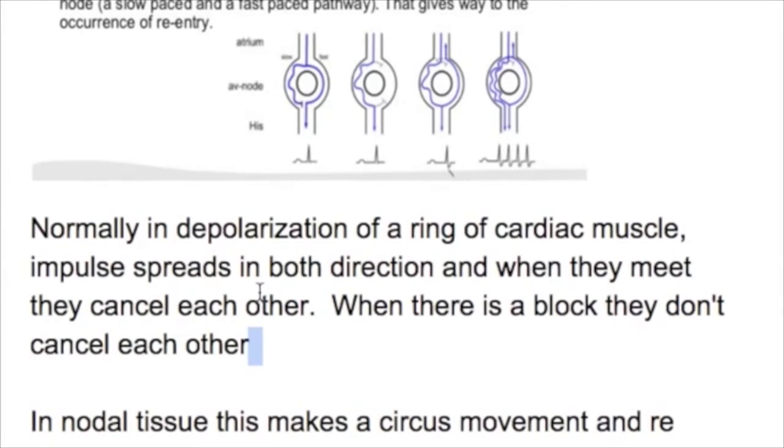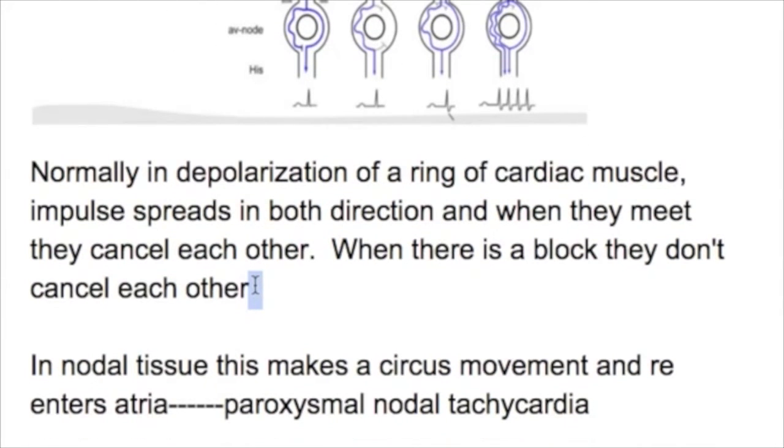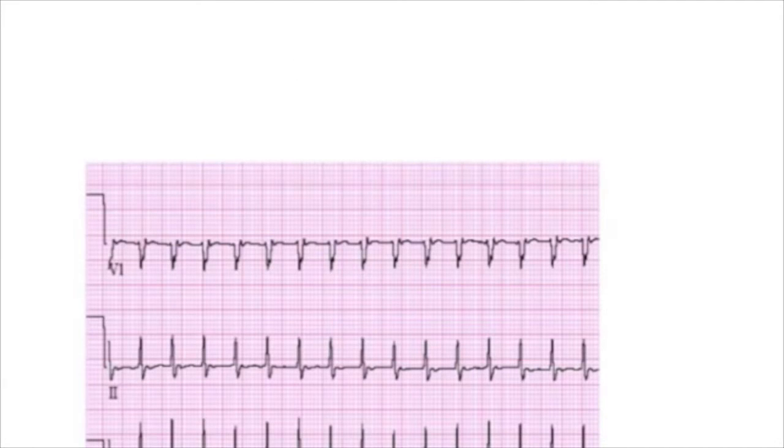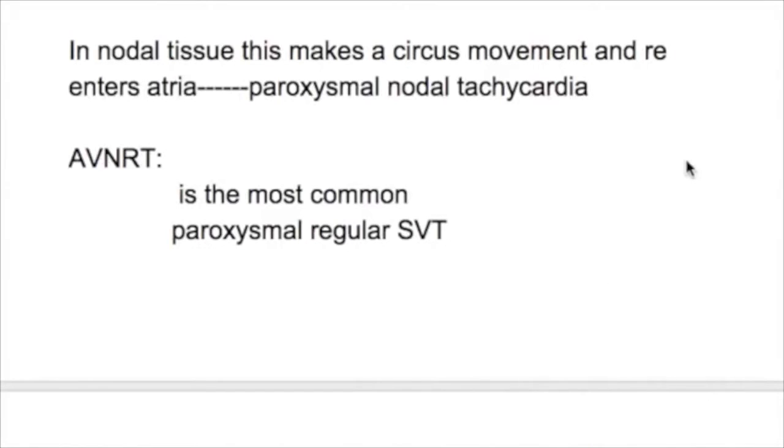In nodal tissue, this creates a circus movement and re-enters the atria, leading to paroxysmal nodal atrial tachycardia. AVNRT is the most common paroxysmal regular supraventricular tachycardia.